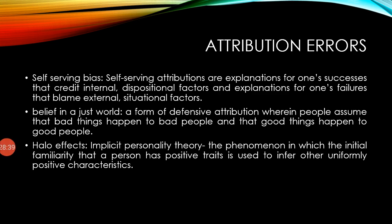The fifth attribution error is the Halo Effect, based on implicit personality theory — the phenomenon in which an initial awareness that a person has positive traits is used to infer other uniformly positive characteristics. For example, if you see one person as social, you will feel that person will help you in a critical situation, but that may not always be the case.